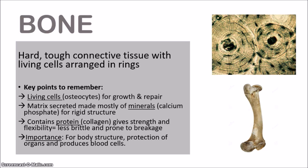Key points to remember about bone tissue: the bone is made up of living cells, and the most common cells of the bone are known as osteocytes. These cells are important for the growth and repair of the bone — if it gets fractured, it can repair itself because osteocytes can multiply and form new bone tissue. These living cells also secrete a matrix made up mostly of minerals, which are calcium and phosphorus, combining to form calcium phosphate.